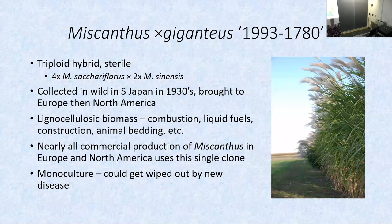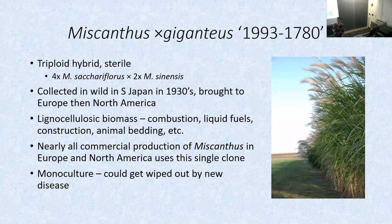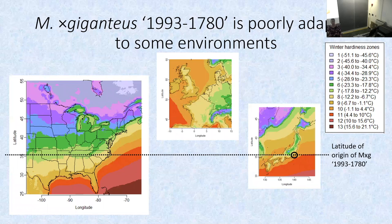Biomass uses include combustion in a biomass boiler — we're actually heating one of our greenhouses this way right now — as well as research into liquid fuels, and more generic uses like paper making, construction, or animal bedding. One big problem is that this is one vegetatively propagated clone, making it very susceptible to a new disease, and we're also wanting to create new biomass clones for better environmental adaptation.